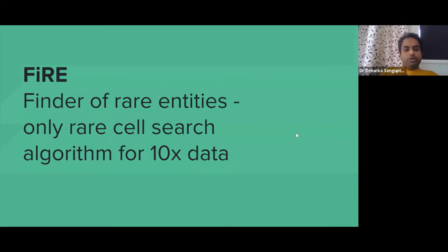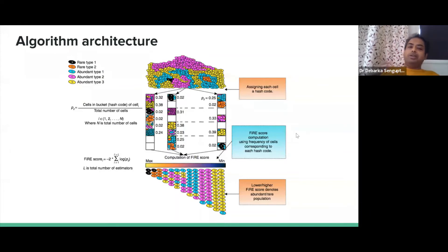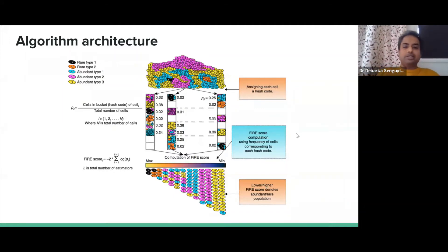We then encountered an interesting problem: how to identify rare cells. One objective of single cell sequencing is to find something not well characterized — cancer stem cells, particular neuron types, circulating tumor cells. Finding a needle in a haystack — computationally, it's like outlier or anomaly detection. We built on locality sensitive hashing as the workhorse for this algorithm as well, working on it for almost three years before incorporating more statistical and mathematical methods.